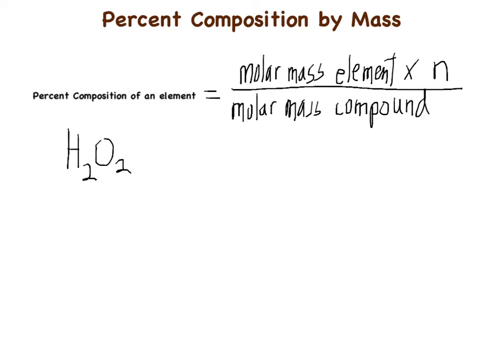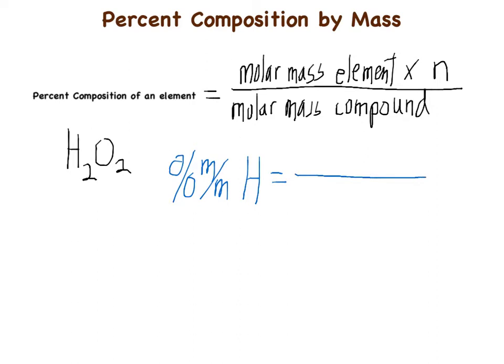Let's work out an example now. The percent by mass of hydrogen equals the molar mass of the element times the number of moles in the compound. The element we're talking about is hydrogen, so the molar mass of hydrogen from the periodic table is 1.008.